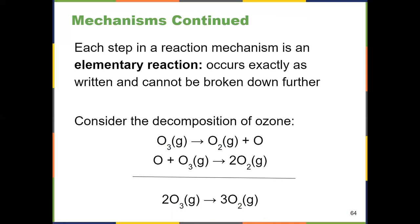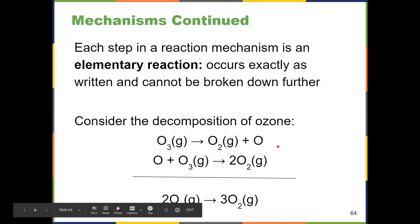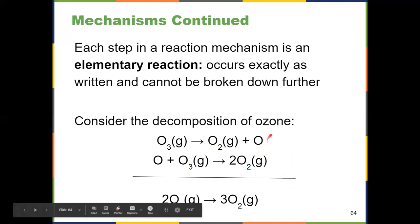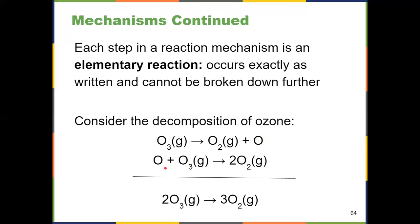But two O3s don't directly form three O2s. So how does it happen? It's a stepwise process. First, we have an ozone that splits into O2 and a monatomic oxygen. And that monatomic oxygen combines with another ozone to form two oxygen molecules. So it's two steps that add together to form the overall reaction, with the monatomic oxygens canceling each other out — just like when we stacked equations using Hess's law in Chapter 5. If it appears on both the left and right side, we cross it out and it doesn't appear in the overall reaction.